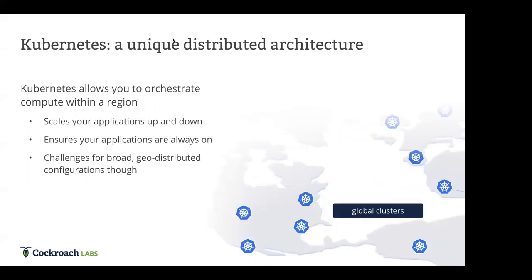Let's start with Kubernetes. Kubernetes allows you to orchestrate compute within a region. Orchestration really allows you to scale applications up and down — your apps and services, built for microservices. It ensures that these things are always on. The genesis of Kubernetes really being exhaust from Google, the backend of Borg, and the way that they deliver their applications — in use everywhere.